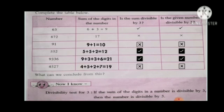Now, what can we conclude from this? Yes, we got the test of divisibility for 3. If the sum of the digits in a number is divisible by 3, then the number is divisible by 3. Children, you have to add the digits of a given number and check whether the sum is divisible by 3. If yes, then the whole number is divisible by 3.